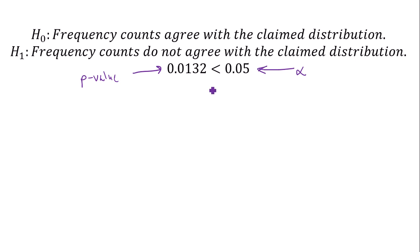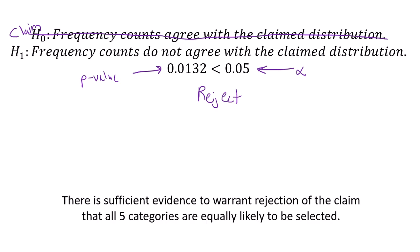Since the p-value is less than alpha, we reject the null hypothesis. Remember, the null hypothesis was our claim here - that the frequencies occurred with the same frequency in each category. We need to write a conclusion statement about our claim. Since we rejected our claim, we say there is sufficient evidence to warrant rejection of the claim that all five categories are equally likely to be selected. And that's how you conduct a goodness of fit test.